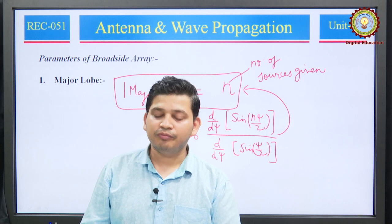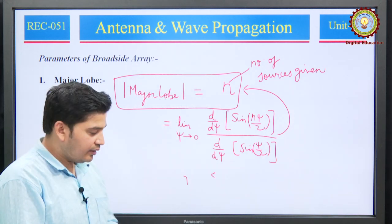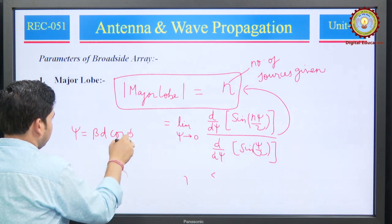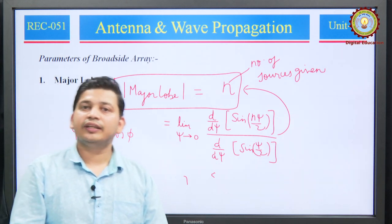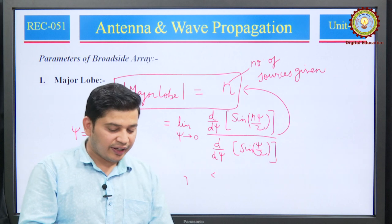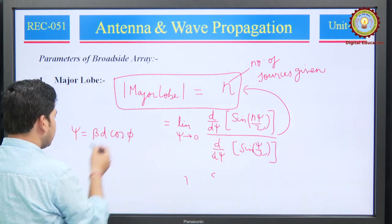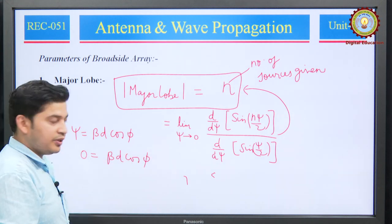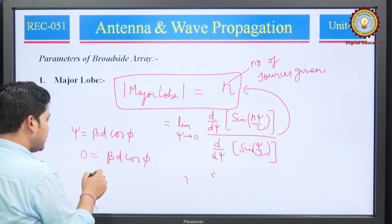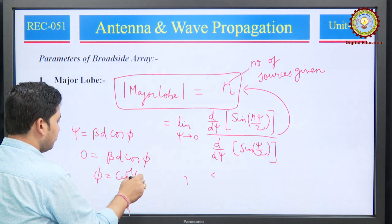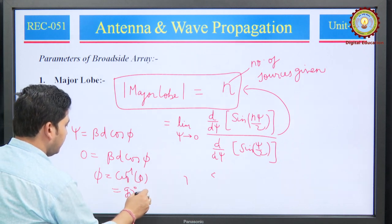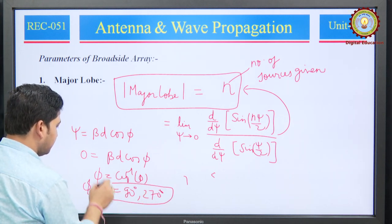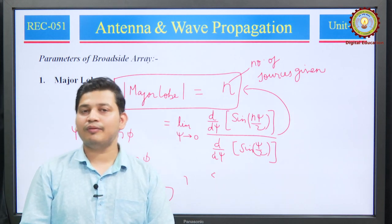The major lobe magnitude is the number of sources n. Second, the direction of maxima: psi = beta*d*cos(phi) = 0, giving cos(phi)=0, so phi = cos⁻¹(0) = 90° or 270°. These are the directions of maxima, phi_max, where we get our major lobe.